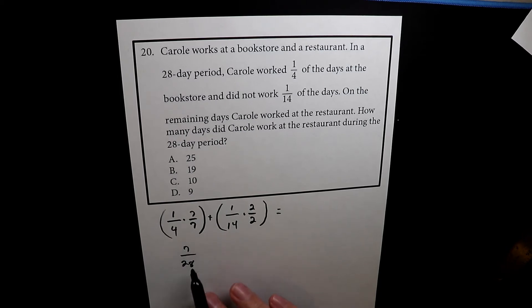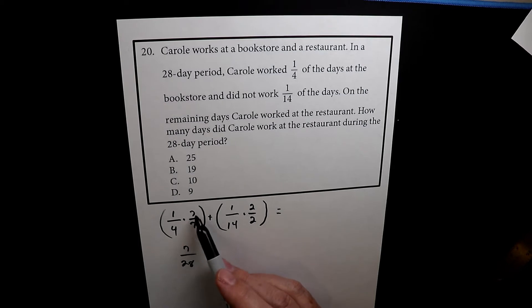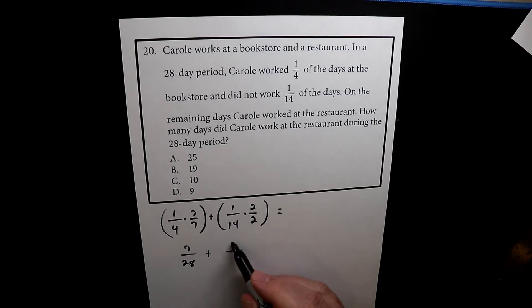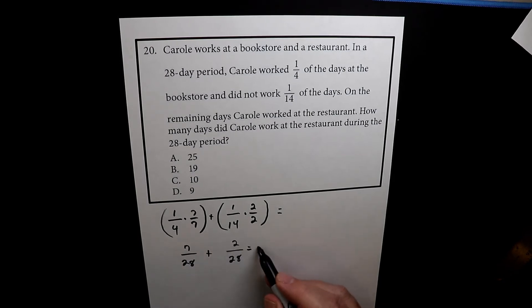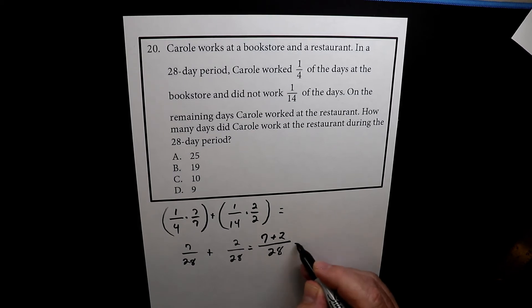So seven over 28 is the same thing as one over four. It might look different, but since we're just multiplying it by seven over seven, which is just one, it doesn't change the value. It's the same thing, it just looks different. Here we have one over two, which one times two is two and 14 times two is 28. So since they have the same denominator, we can see right away that we can just add them straight across because this is the same as seven plus two over 28, which is seven plus two is nine over 28.